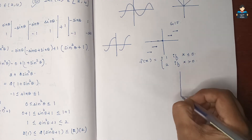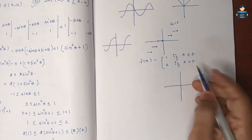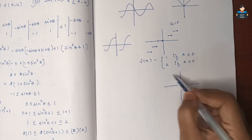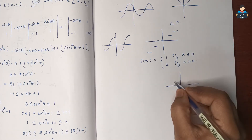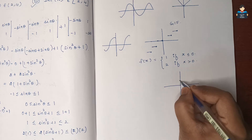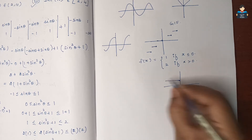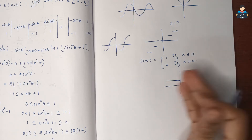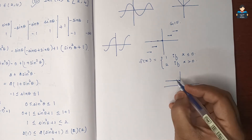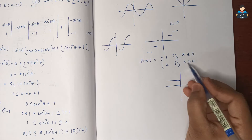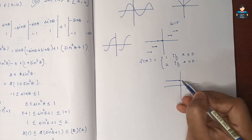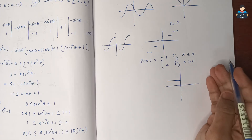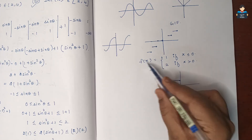Let's look at the graph. For x values less than 0, that is the negative values, the function is on the left-hand side. For x values greater than 0, that is positive values, f(x) is 2.